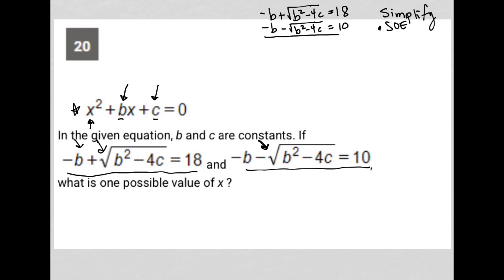Now that I've set them up as a system of equations, I'm going to add the bottom equation to the top equation. In doing that, I get -2b. My b² - 4c will cross out because I have a positive on top and a negative on bottom. And then 18 + 10 = 28.